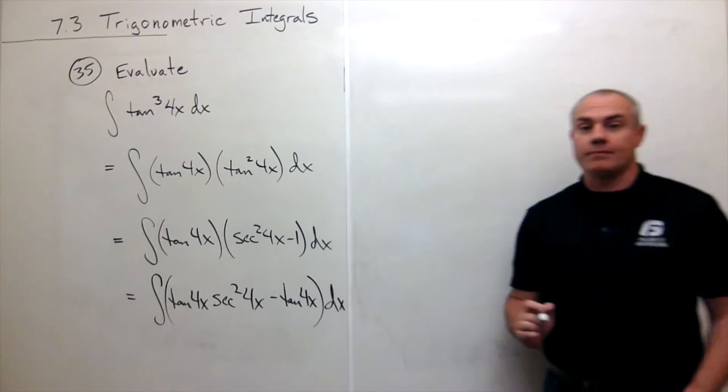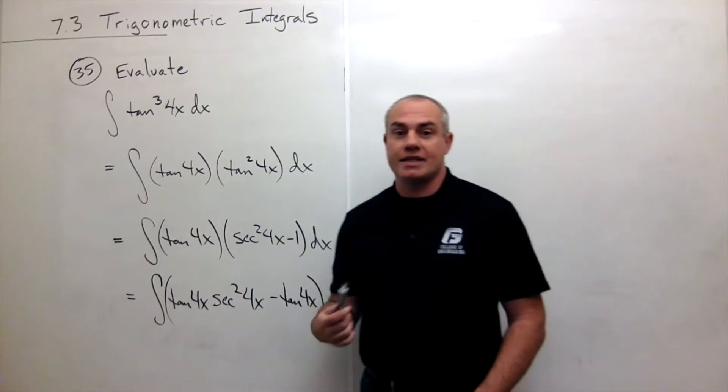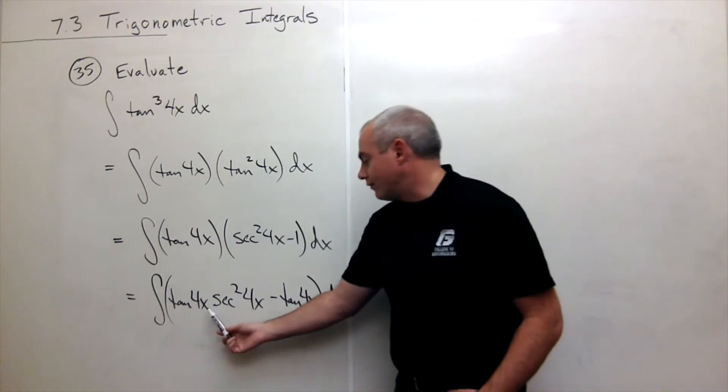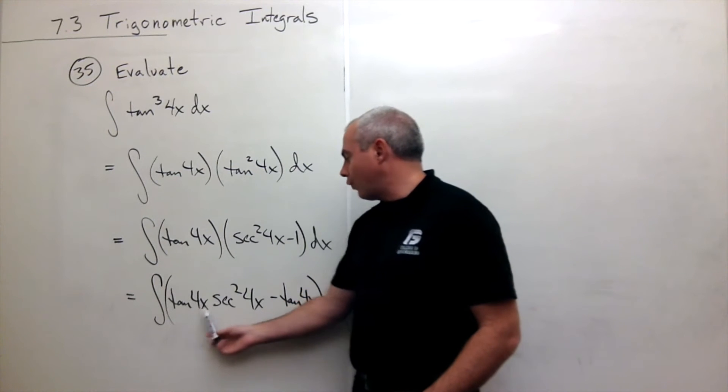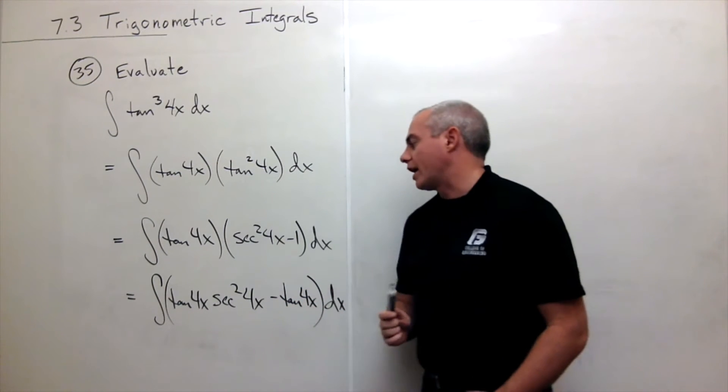And now the question is, can I take the antiderivative of these two pieces? First, let's look at tangent of 4x secant squared of 4x.